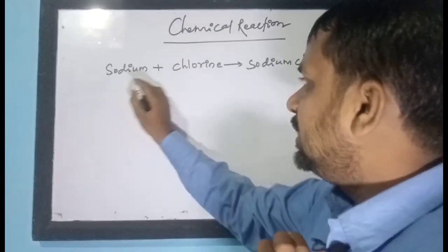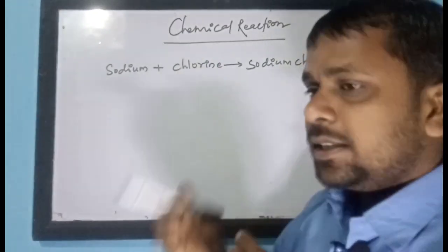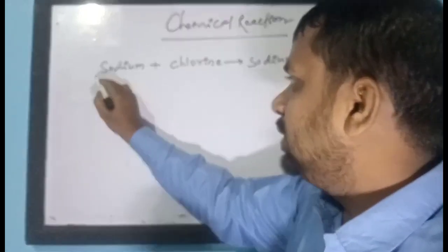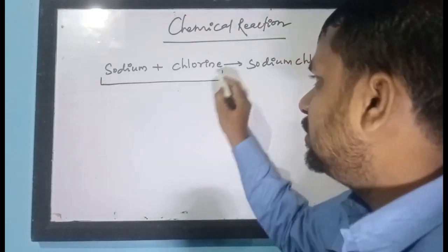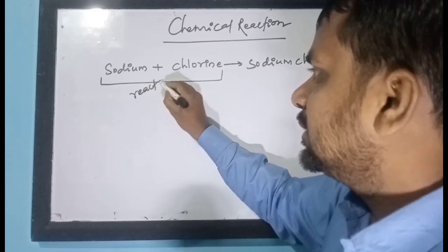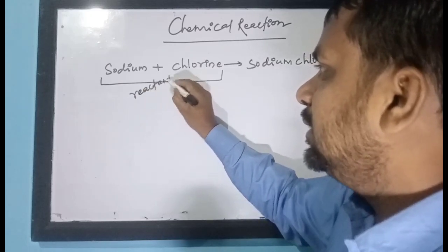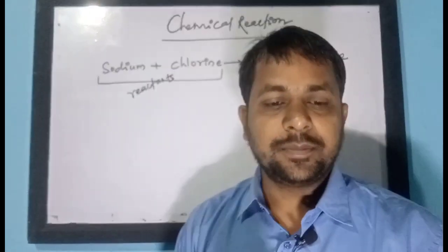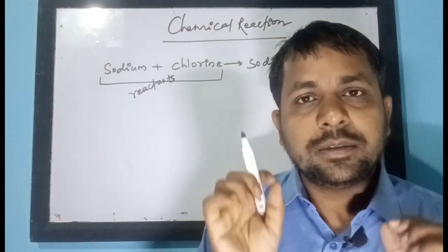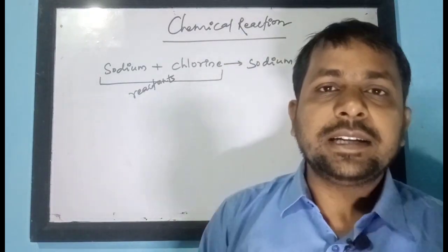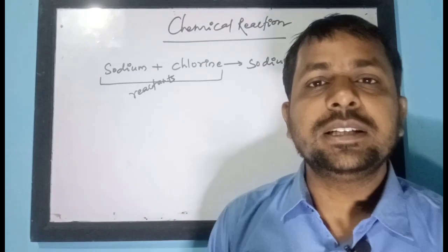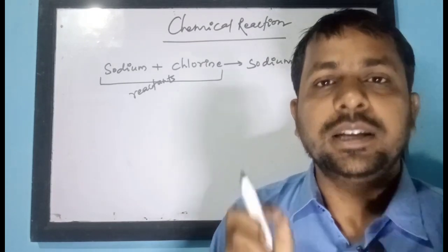Sodium and chlorine are taking part in the chemical reaction, so sodium and chlorine are called reactants. What is a reactant? The substance that takes part in the chemical reaction is called a reactant.